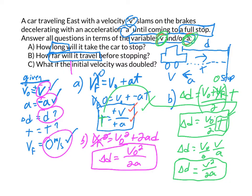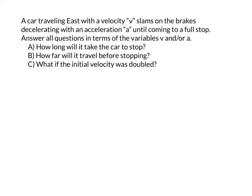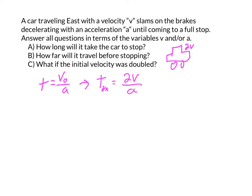The last question asks what happens if we double the initial velocity. Recall that our time was t equals v over a. If we double the velocity, t becomes 2v over a, which is just 2 times v over a — so doubling the velocity doubles the time. Conceptually, t is directly proportional to v, so if you double the velocity, the time also doubles.